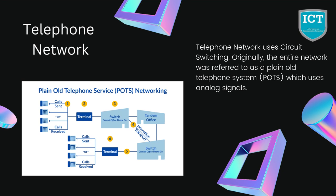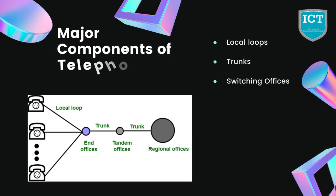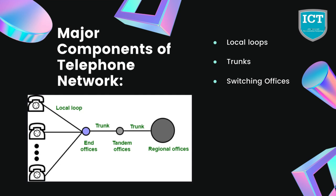Now let us talk about some major components of telephone network. Basically, there are three major components of telephone network: those are local loops, trunks, and switching offices.